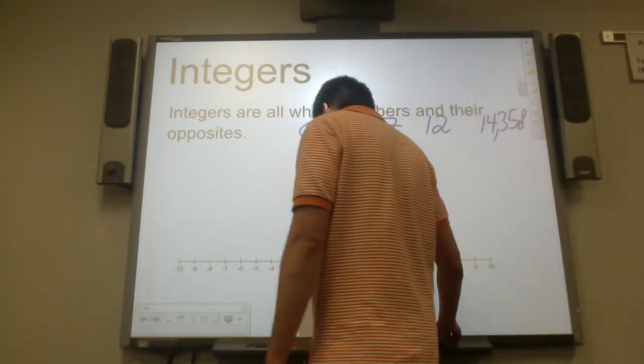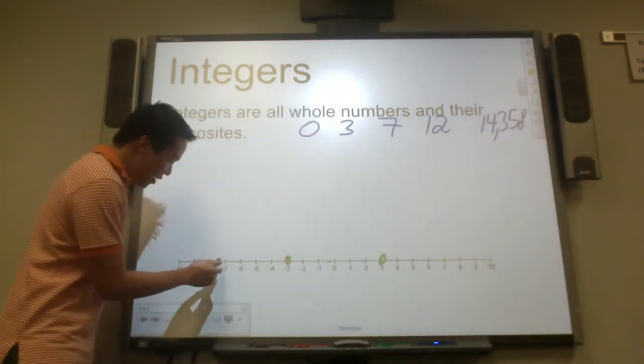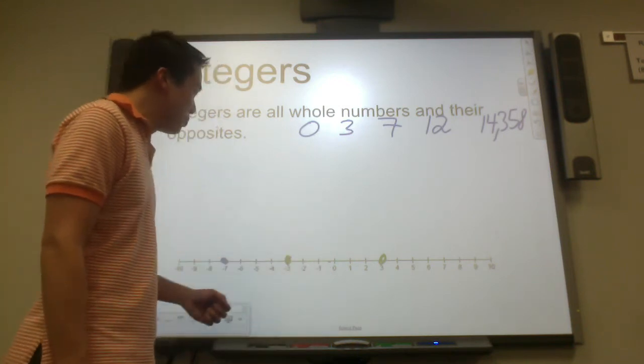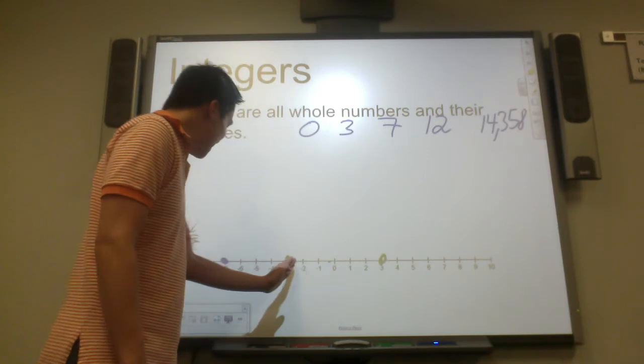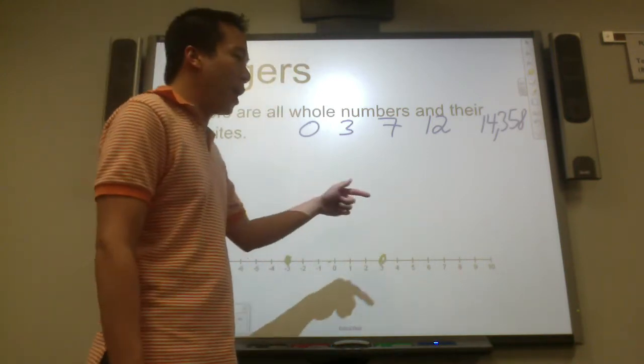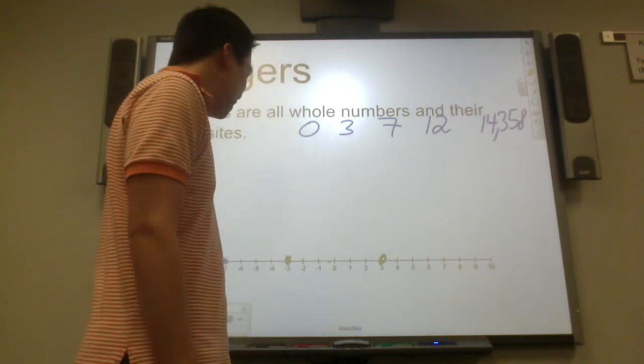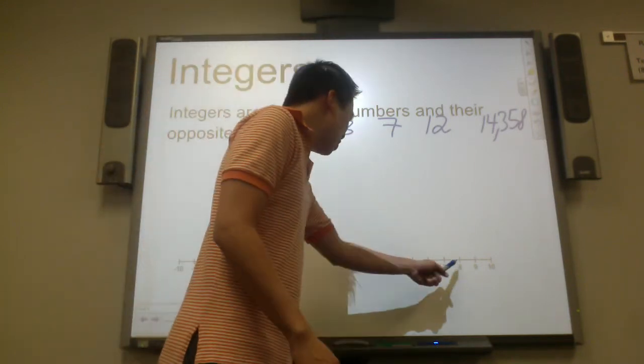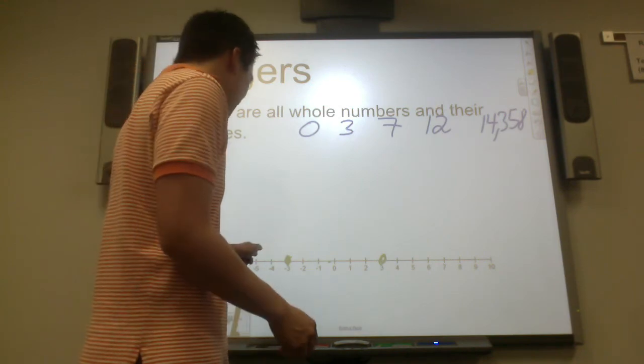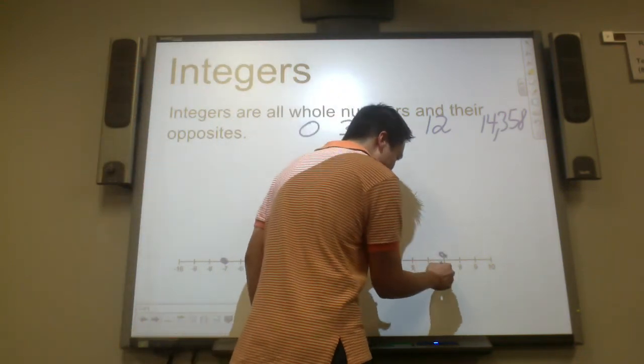So let's look at the other side. Let's take negative seven. Negative seven is how many units from zero? It is seven units from zero. On the other side, on the positive integer side, which of these integers is seven units from zero? I think it's going to be this one.